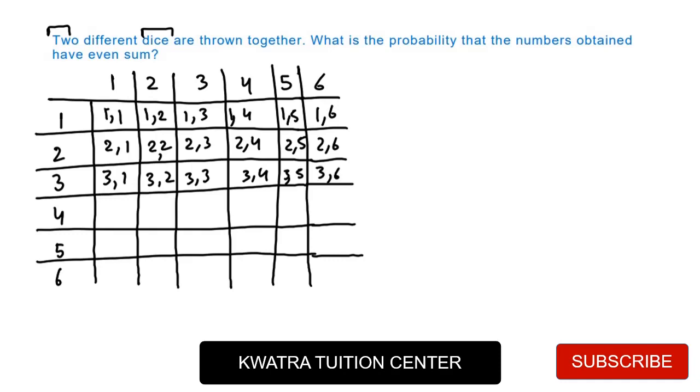Next, we will see 4,1, 4,2, 4,3, 4,4, 4,5, 4,6. Then 5,1, 5,2, 5,3, 5,4, 5,5, 5,6. And 6,1, 6,2, 6,3, 6,4, 6,5. Last, we will have 6,6.